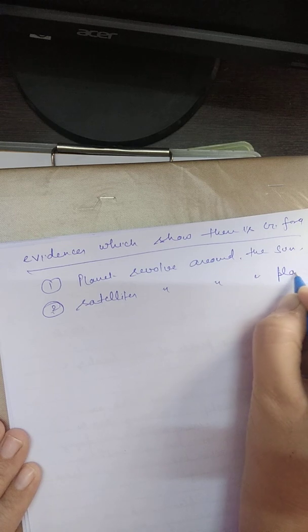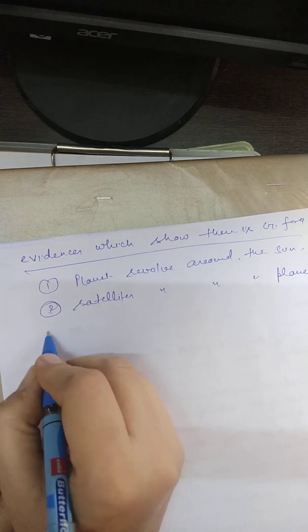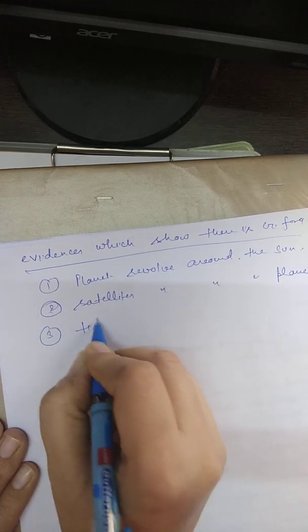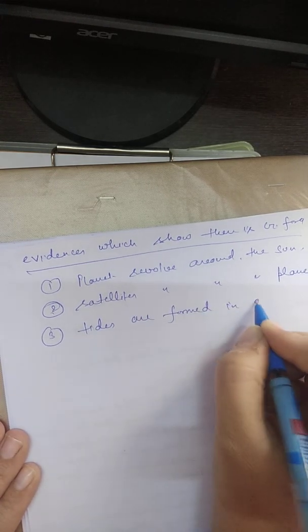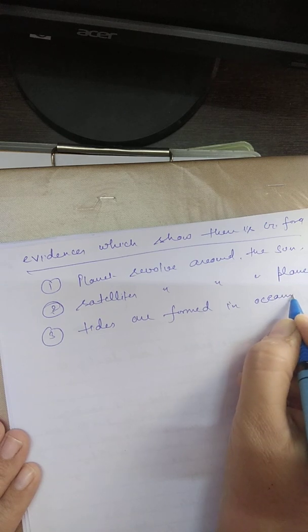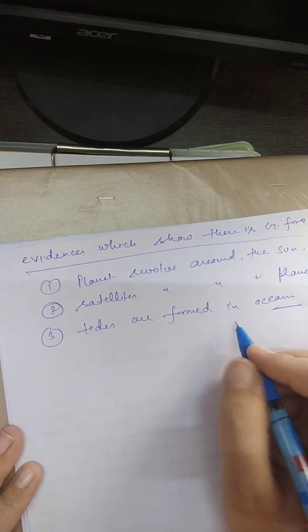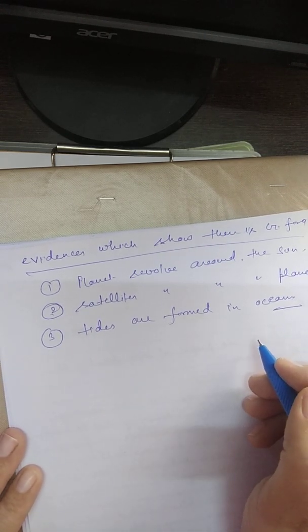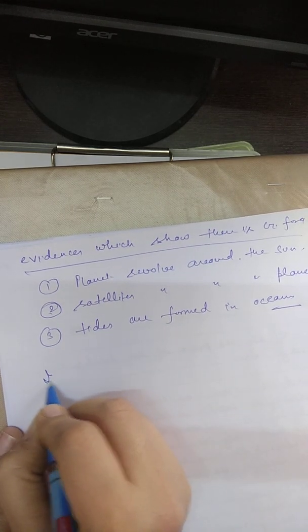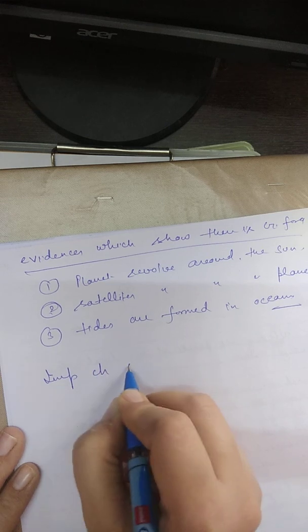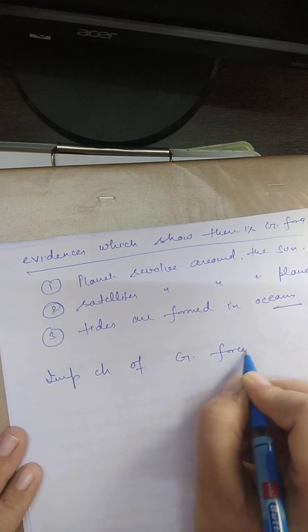Satellites revolve around the planet due to gravitational force of attraction. Tides are formed in ocean due to gravitational force between ocean water and moon.